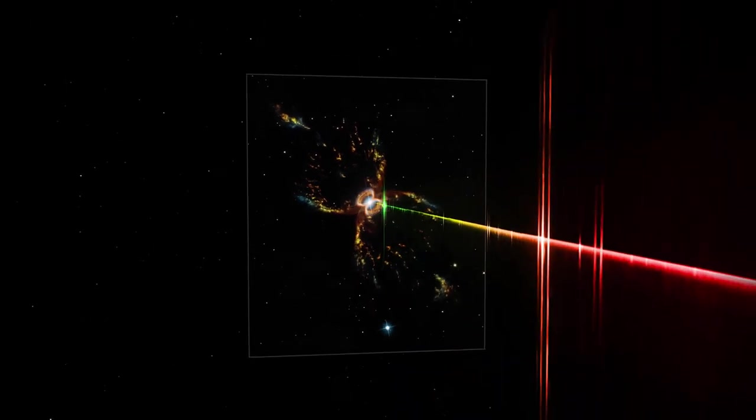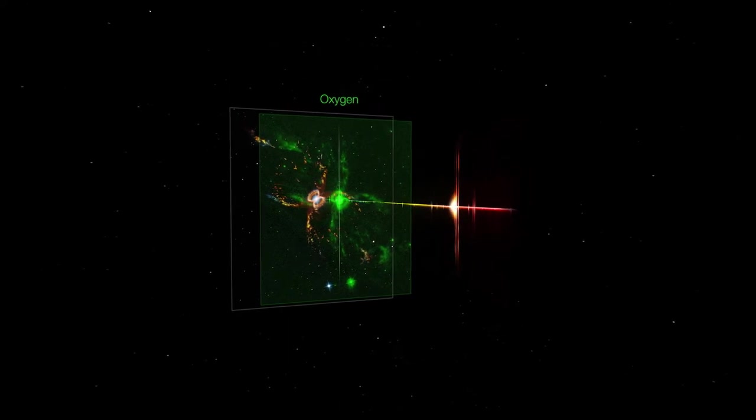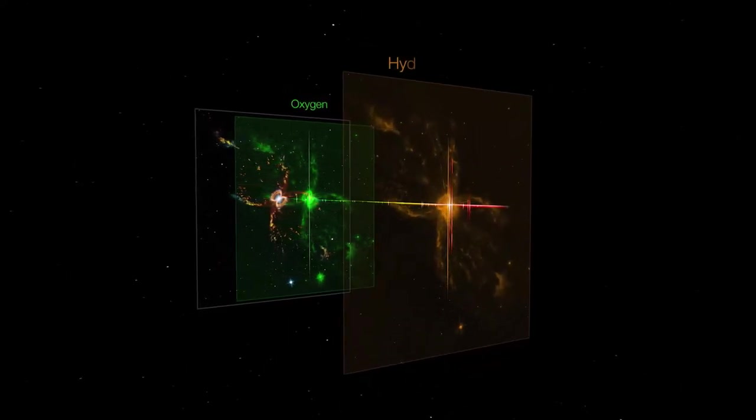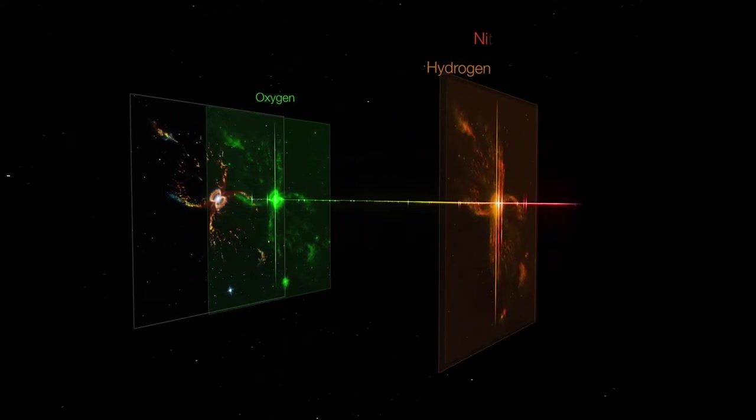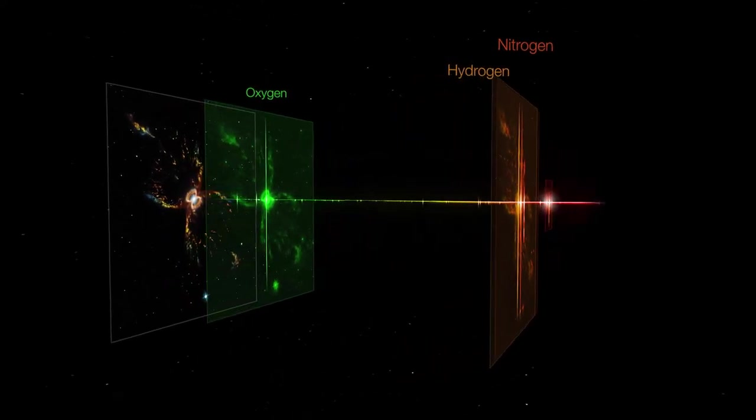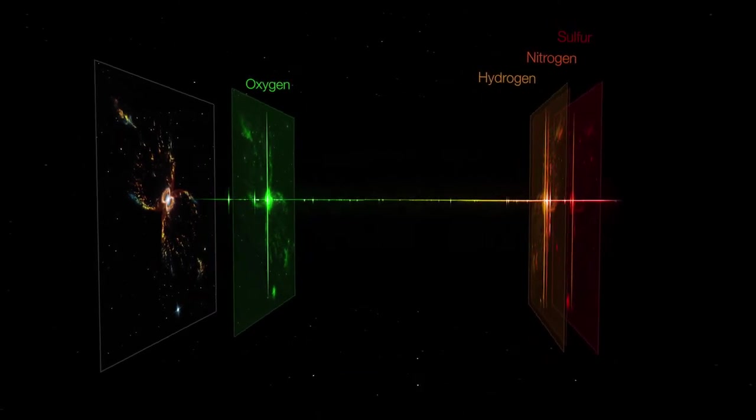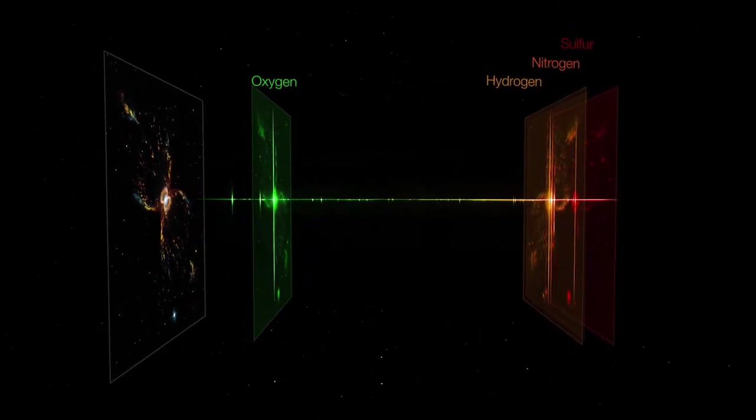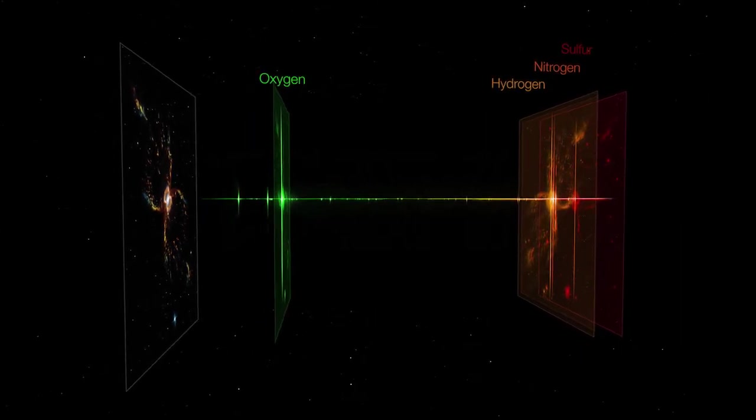The spectrum's pattern can be analyzed by astronomers to decipher what atoms and molecules are present in the source. This helps them to understand the various physical and chemical characteristics of the sources. In this way, Hubble's images tell us what something looks like, while the spectrum data tell us what it is and what it's made of.